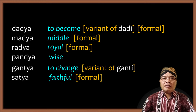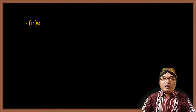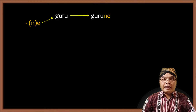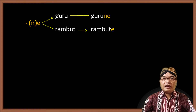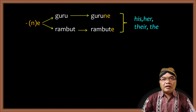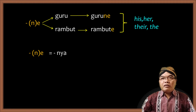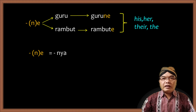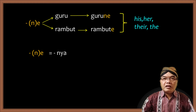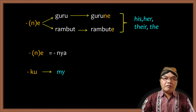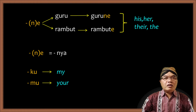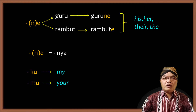The next important thing dealing with Javanese pronunciation is the ending NE. This means when the word ends in a vowel, the ending is NE, and when the word ends in a consonant, the ending is A. This ending means his, her, their, or the — which is the equivalent to the NYA ending in Bahasa Indonesia. Apart from the NE ending, there are two more endings to remember: KU meaning my, and MU meaning your. The very important thing to remember is that those endings, when attached to a final open syllable with O sound, change that O sound into A.